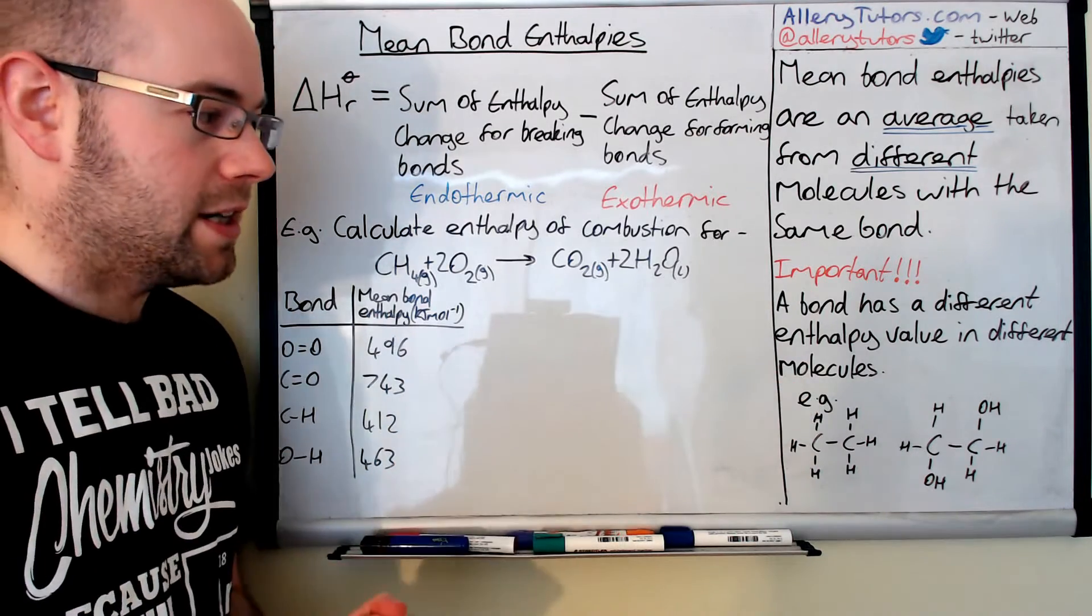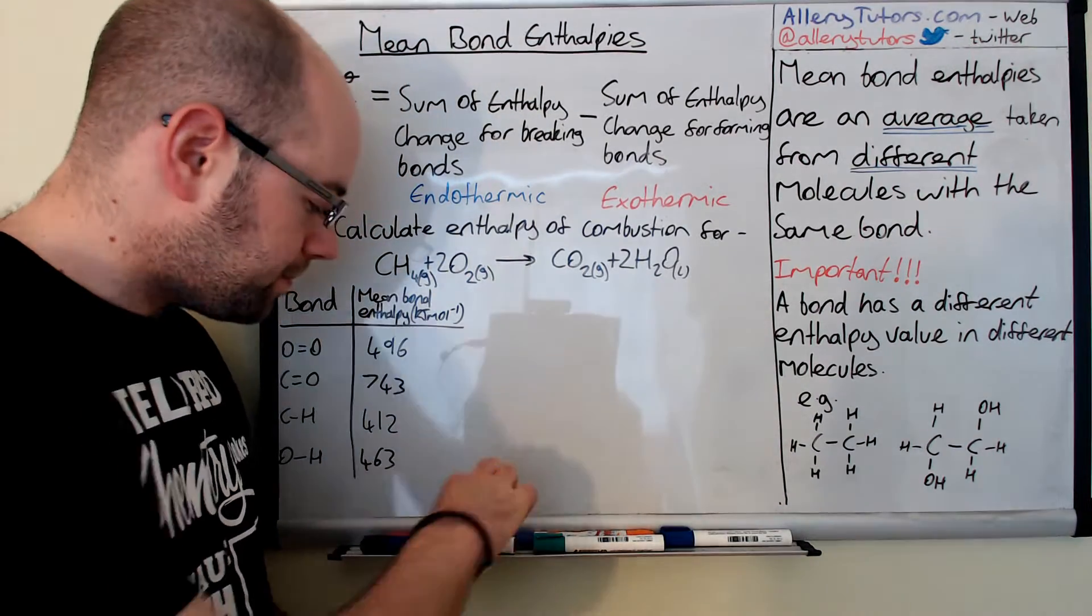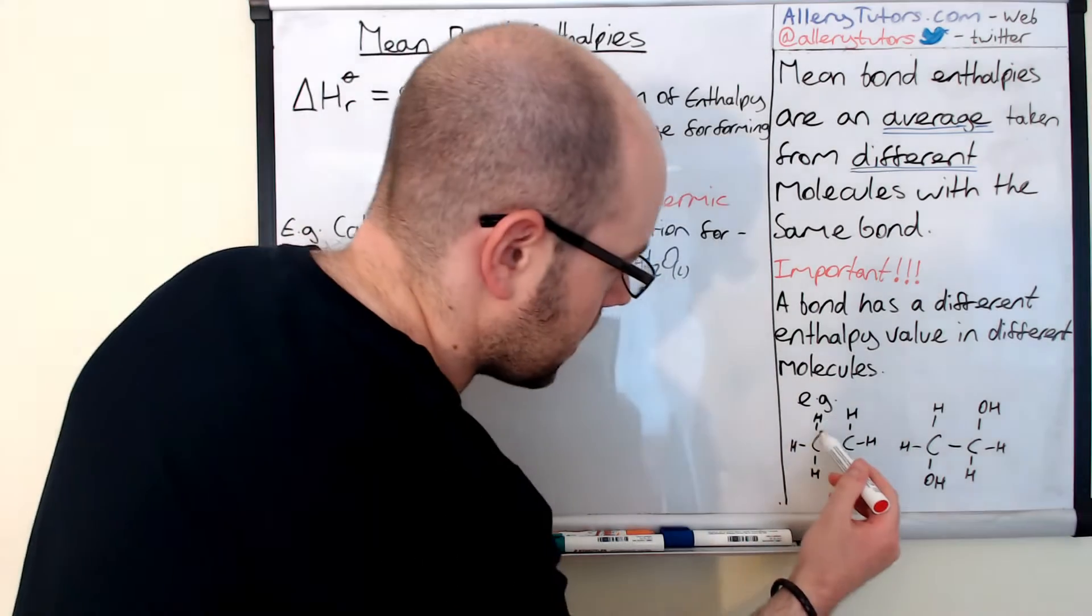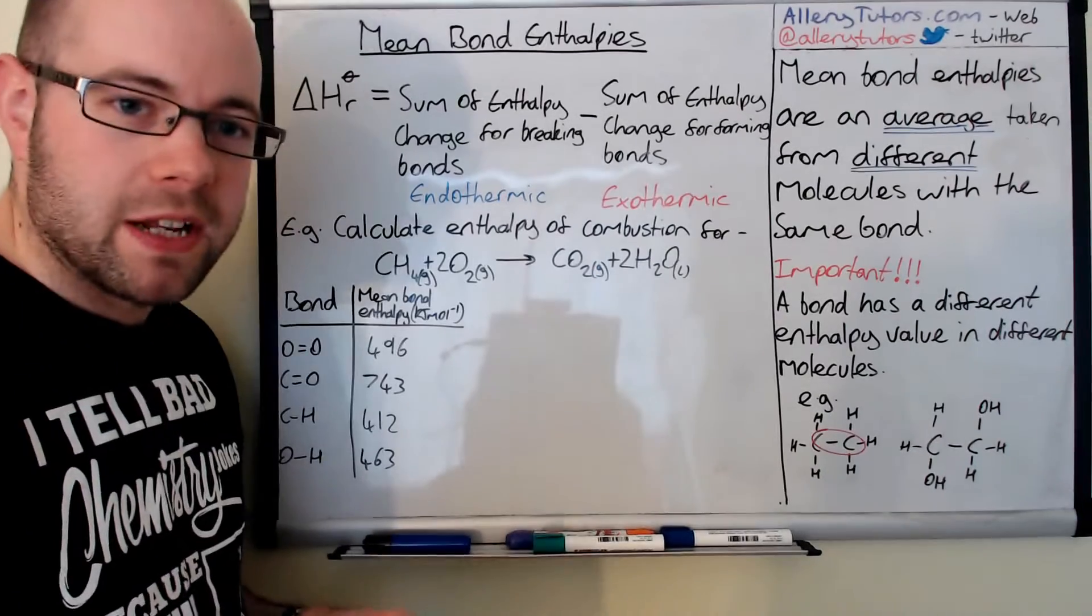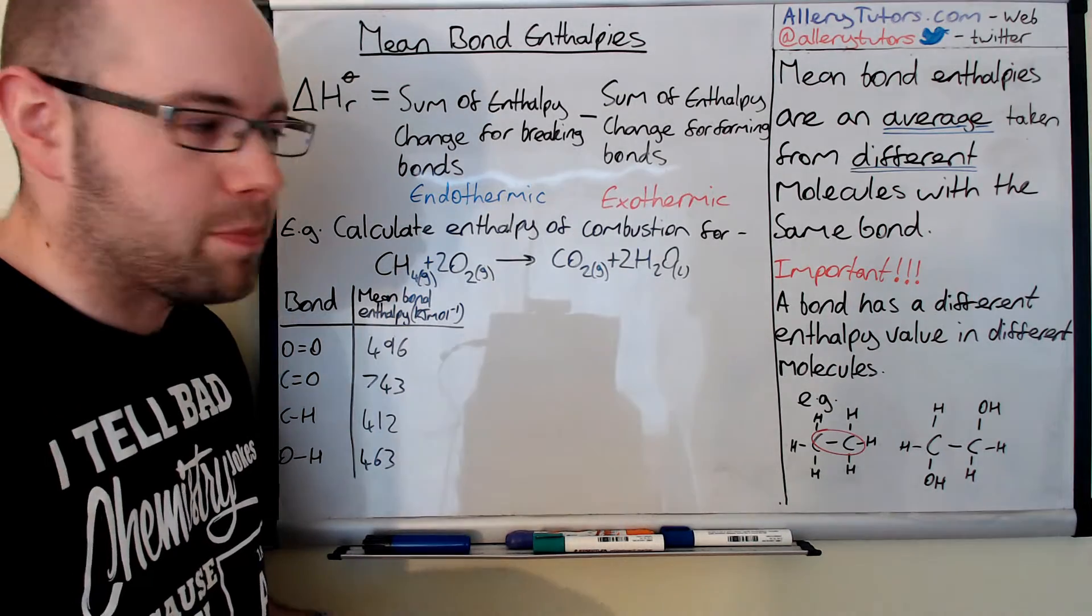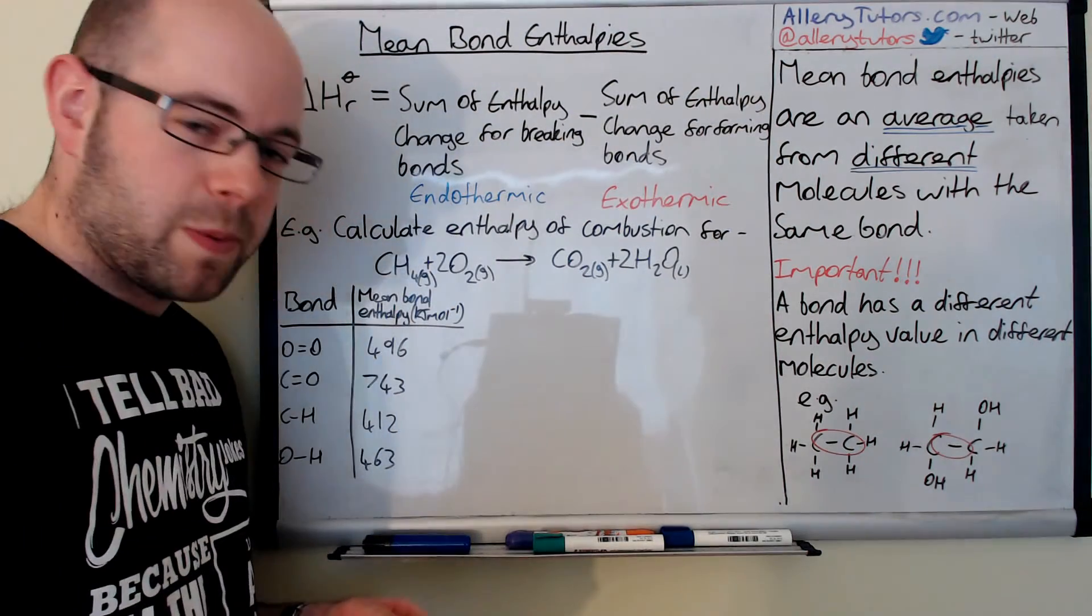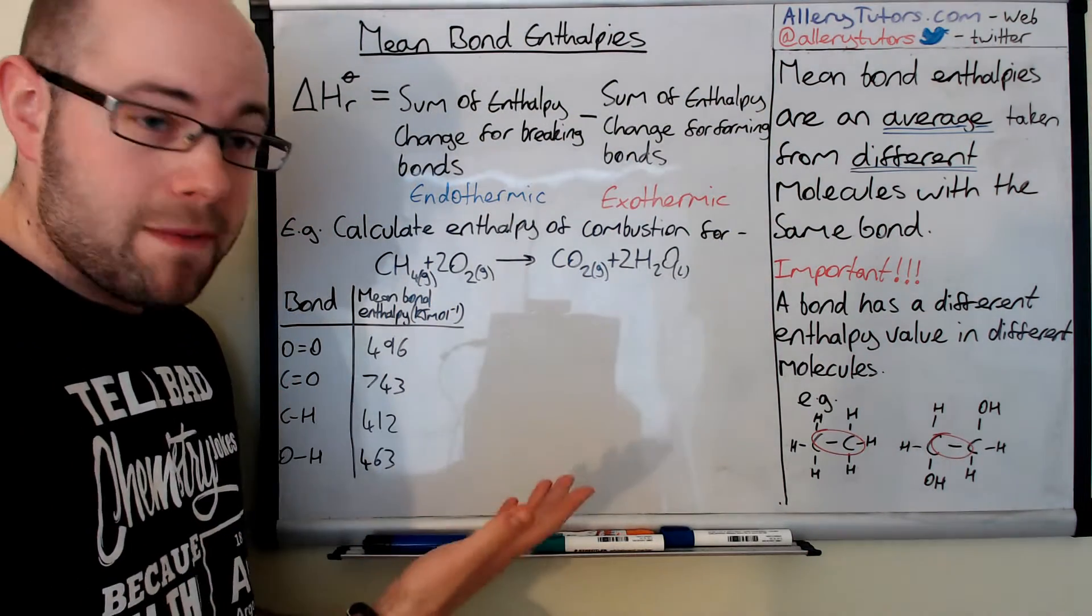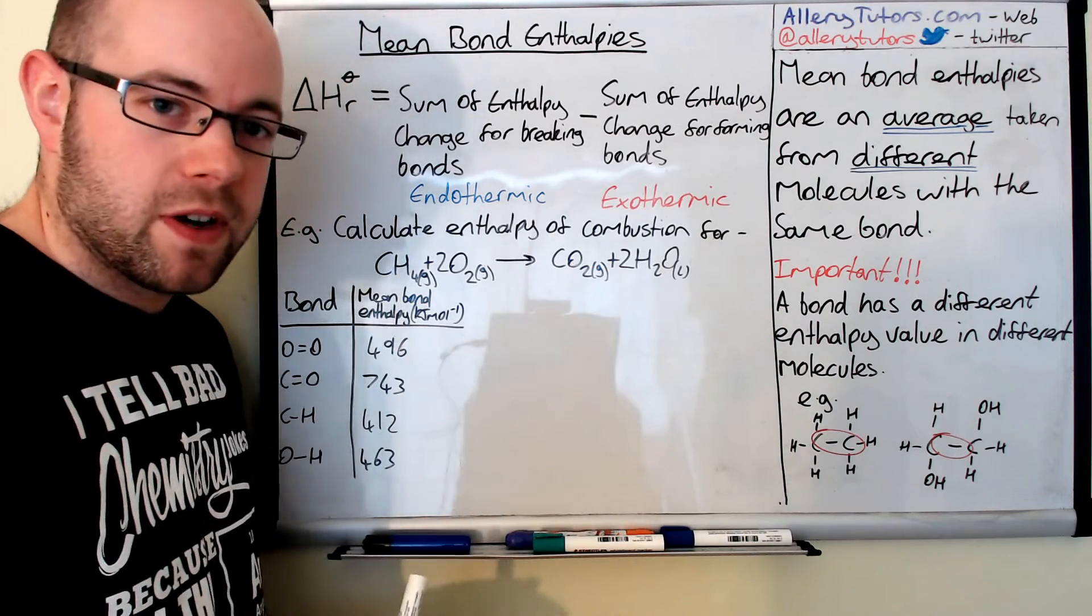For example, if we're looking at the C-C bond, I'll just highlight it here in red. That will have a particular value when it's bonded in something like ethane, but when that C-C bond is in a diol like this molecule here, then the bond enthalpy is actually different. The same bond, the C-C bond, but it's different because it's bonded in a different environment.